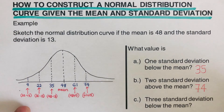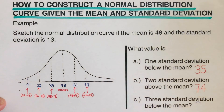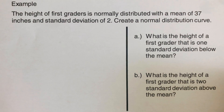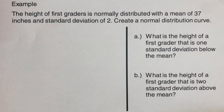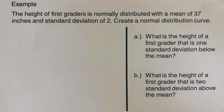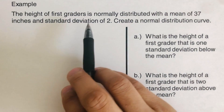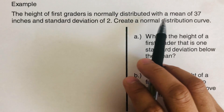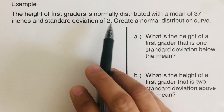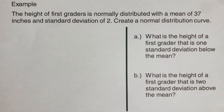I encourage you to pause this video and try the next problem on your own, then check your answer. The height of first graders is normally distributed with a mean of 37 inches and a standard deviation of 2. Create a normal distribution curve.